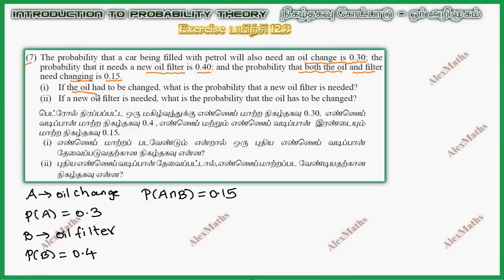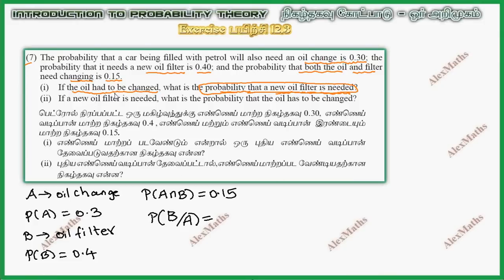If the oil had to be changed, what is the probability that a new oil filter is needed? So P of B given A equals P of B intersection A divided by P of A. A intersection B and B intersection A are the same, so that is 0.15 whole divided by P of A, which is 0.30.